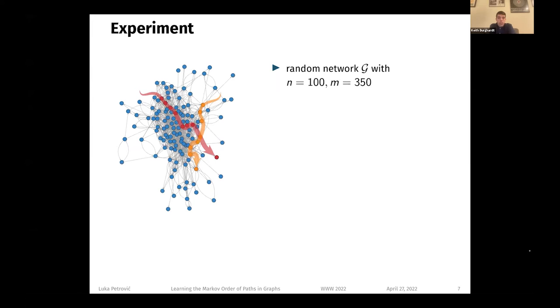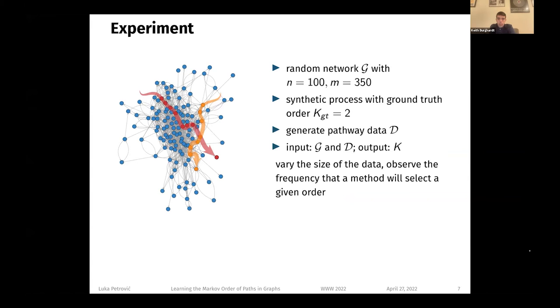We ran synthetic experiments to test the performance of the Bayes factor method versus the likelihood ratio test and versus the AIC and BIC, which we applied to multi-order network models. To generate the graph constraint, we use Erdős–Rényi random graphs with 100 nodes and 350 edges. To generate pathway data, we run a process with second-order correlations on this network. Both the graph constraint and the pathway data are used as inputs for the model selection methods. The output of each experiment is the detected order, and we vary the size of the pathway data and observe the frequency that each method will select a given order.